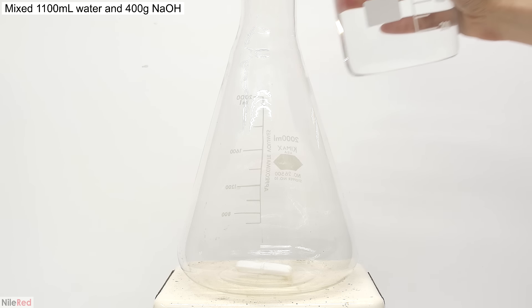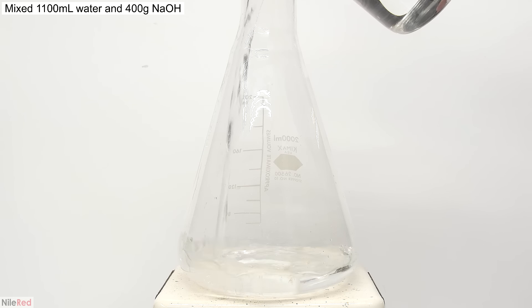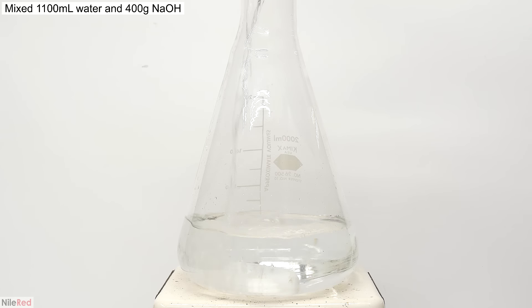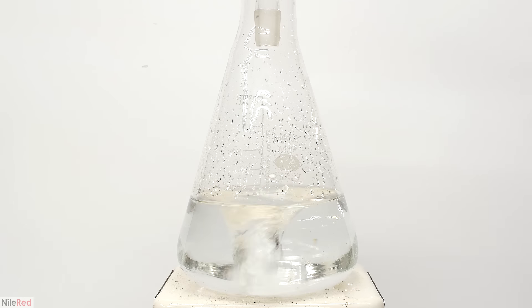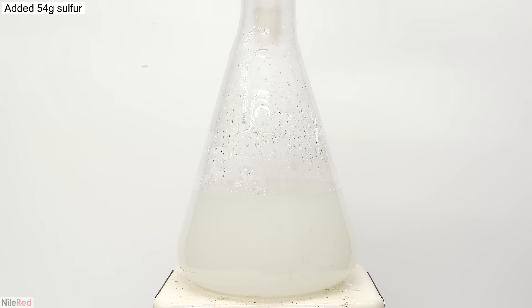Now what I need to do is make a polysulfide solution. The first step is to make a strong sodium hydroxide solution by mixing 400 grams of sodium hydroxide in 1100 milliliters of distilled water. I turn on very strong stirring and then dump in all of the sodium hydroxide. One thing to keep in mind is that dissolving sodium hydroxide in water is very exothermic, so it's going to heat up a lot.